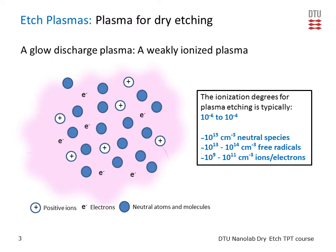The plasma we are using in dry etching is a weakly ionized plasma, also called a glow discharge plasma. In this kind of plasma, only a very small fraction of the neutrals are formed into ions — only about 1 out of 10,000 at the most. That means the temperature can be kept down around room temperature, and therefore it is very useful for etching our samples. There are about 10^15 neutral species per cubic centimeter, but only about 10^9 to 10^11 ions and electrons per cubic centimeter.